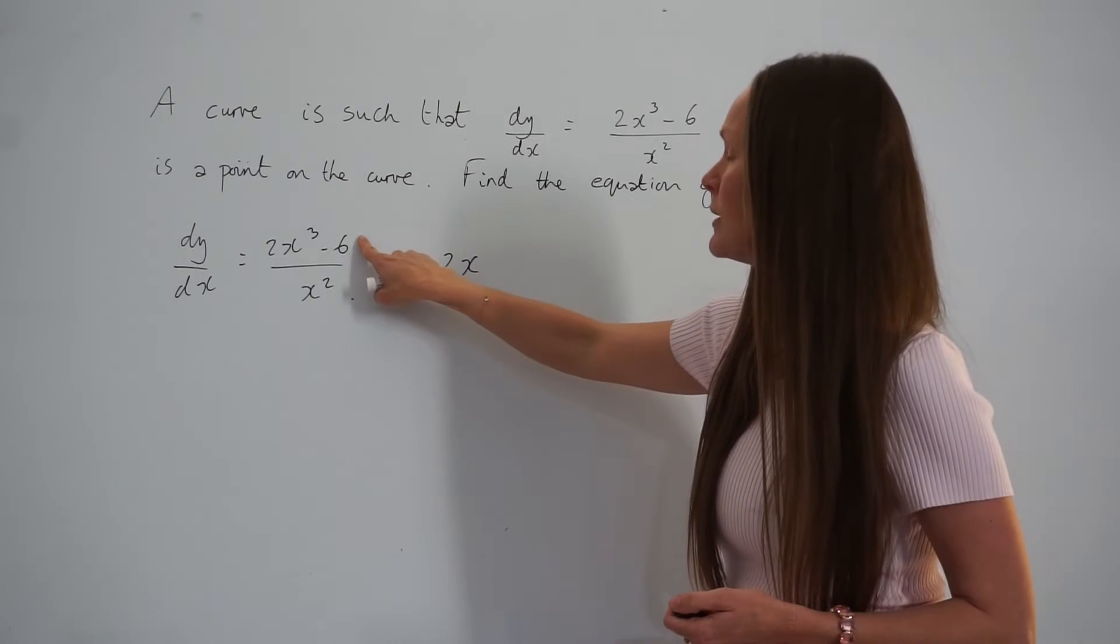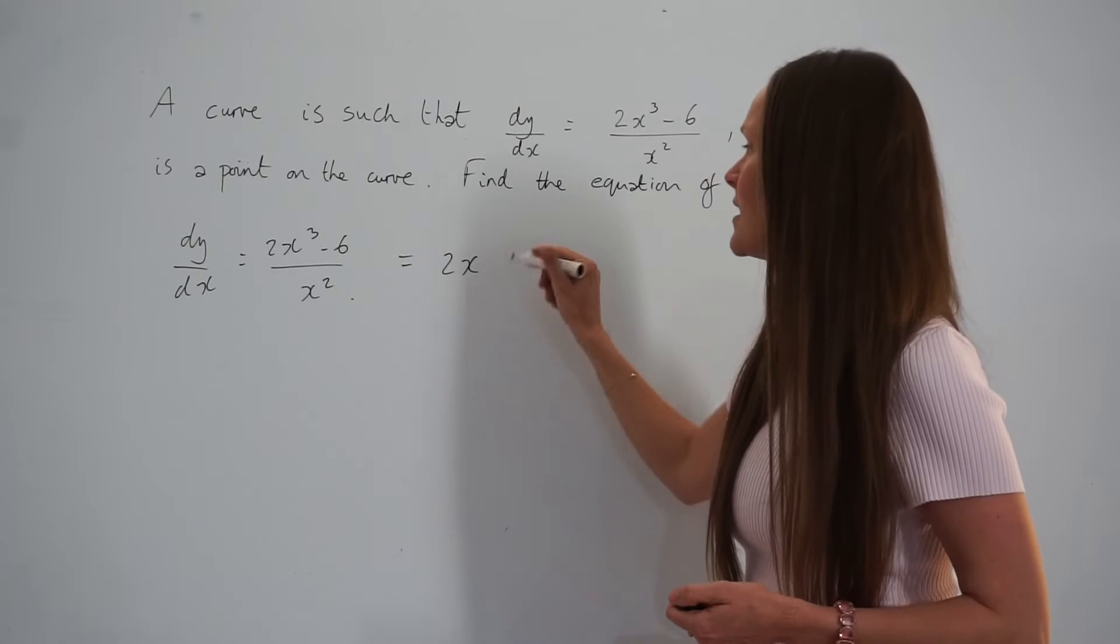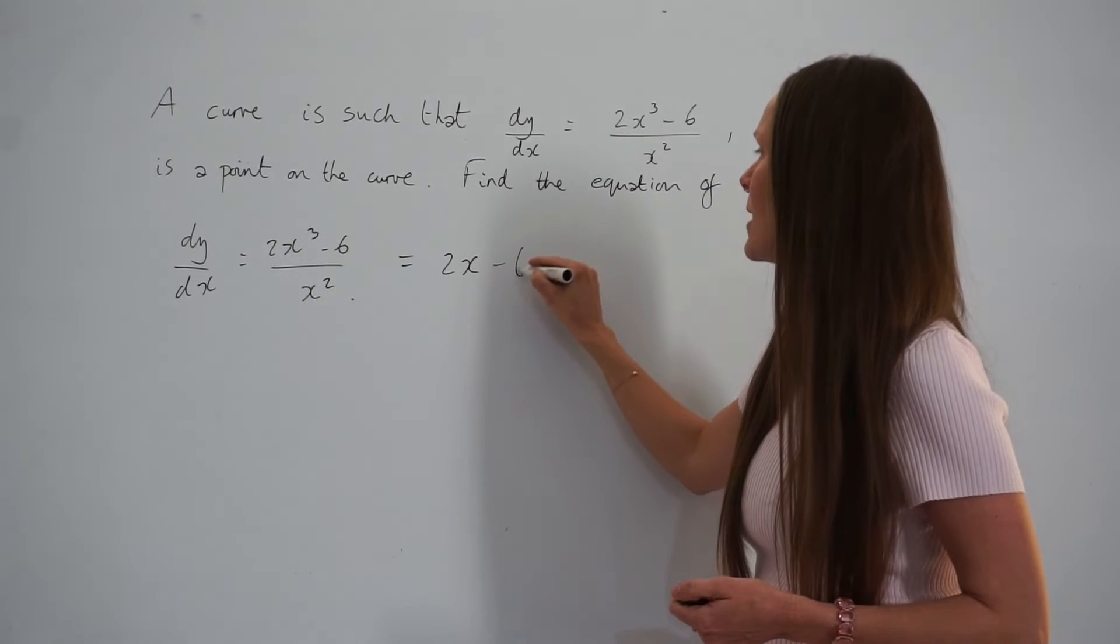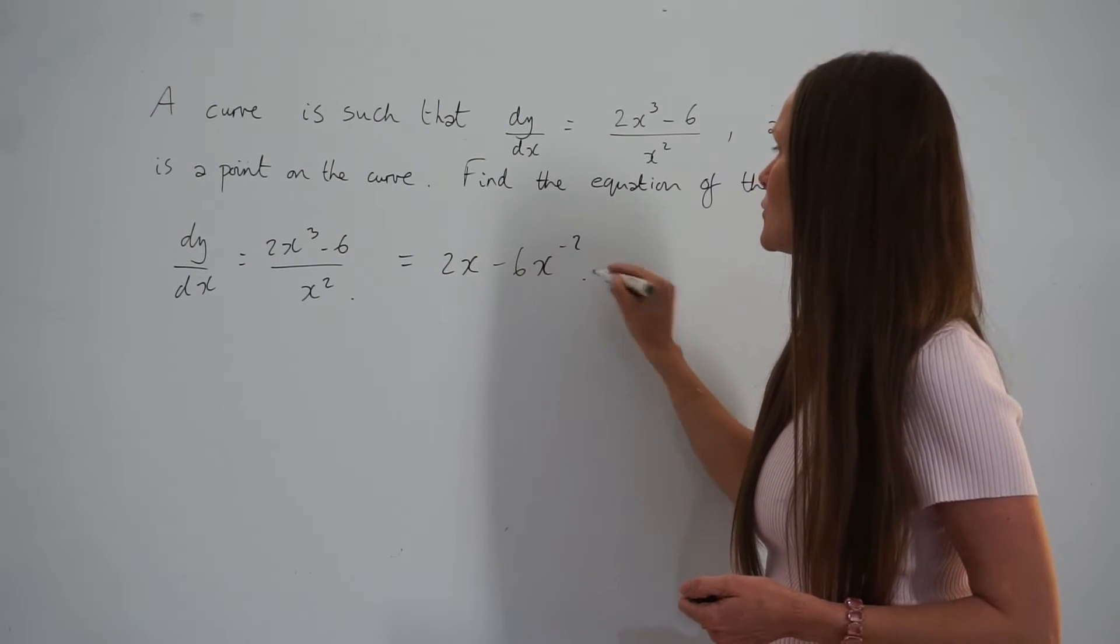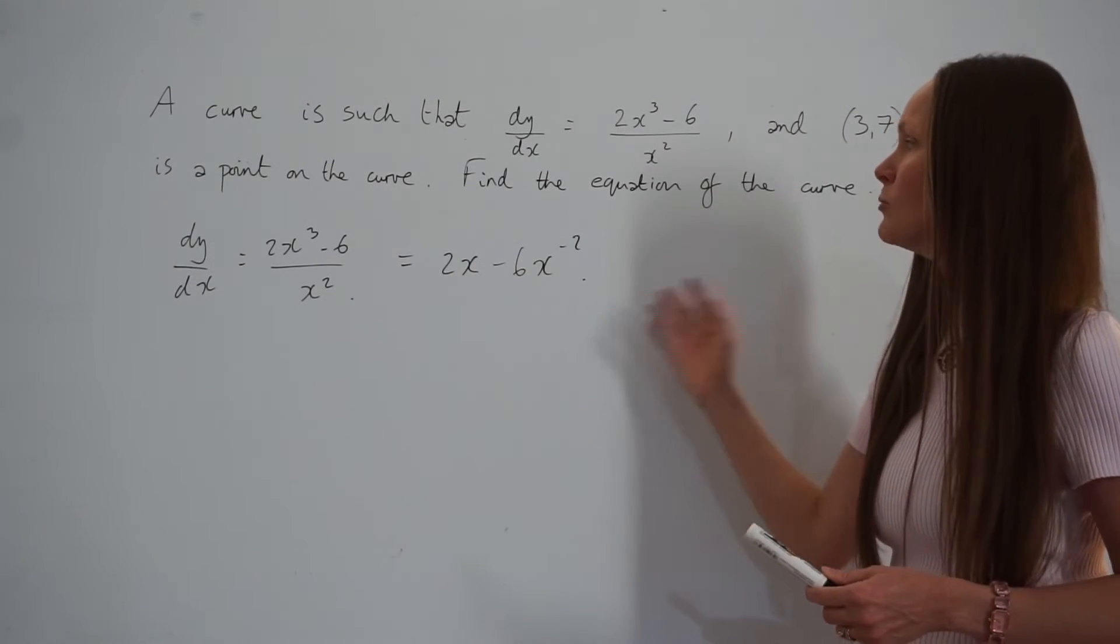If we rewrite this part, negative 6 divided by x² can be rewritten as -6x to the power of -2. So I'm just rewriting dy/dx in its power form to begin with.